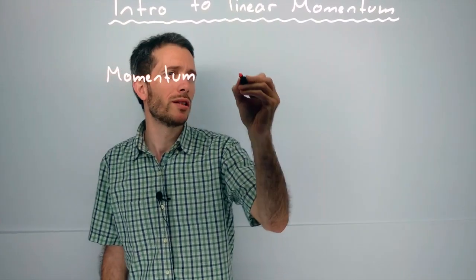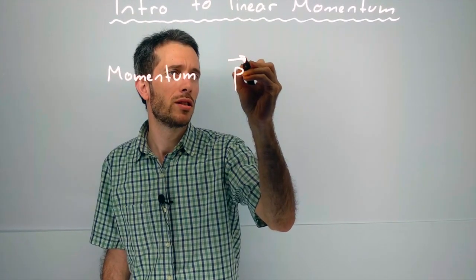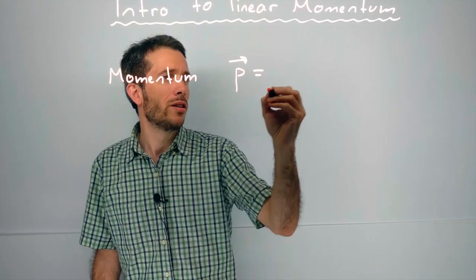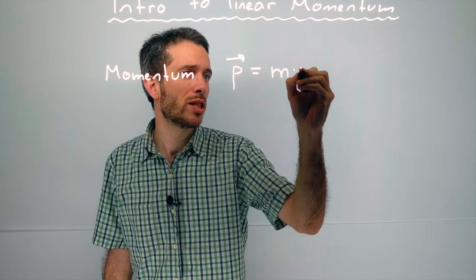Momentum, which we usually use the letter p, is defined as the linear inertia times the velocity.